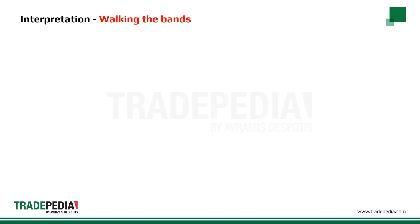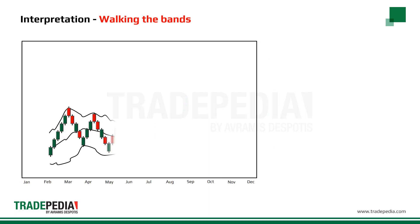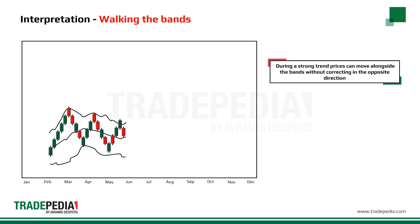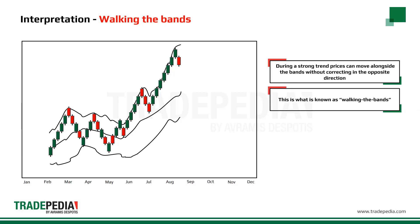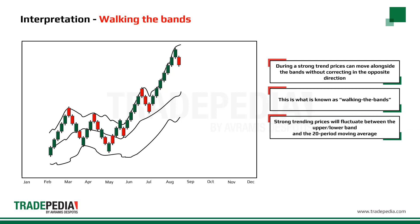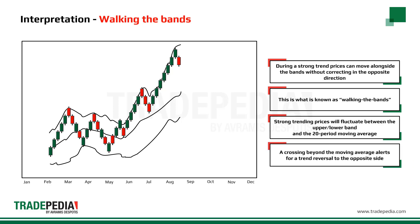Walking the Bands: During a strong trend, prices can move alongside the upper or lower bands with many touches without correcting in the opposite direction. This is what is known as walking the bands. Strong trending prices will fluctuate between the upper or lower band and the 20-period moving average. A crossing beyond the moving average alerts for a trend reversal to the opposite side.